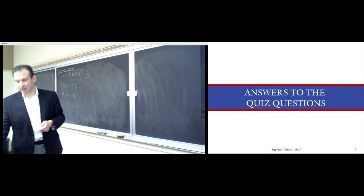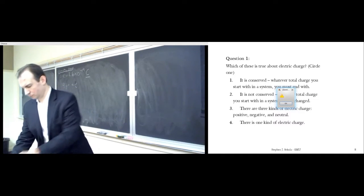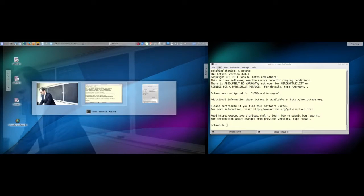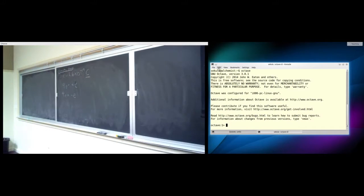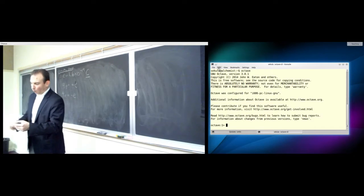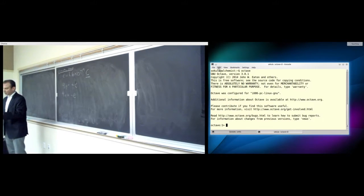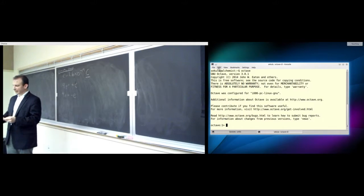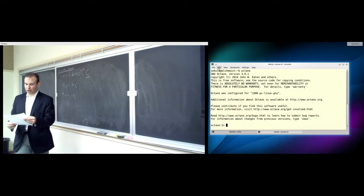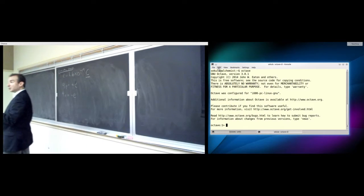Let's talk about the quiz answers. First question: which of these is true about electric charge? One: it is conserved. Two: it is not conserved. Three: there are three kinds of electric charge. Four: there is one kind of electric charge. The correct answer is one — it is conserved, as far as we know. We measure this relentlessly. Whatever total charge you start with in a system, as long as you don't change your definition of the system, it will remain the same forever. Charge is neither created nor destroyed.